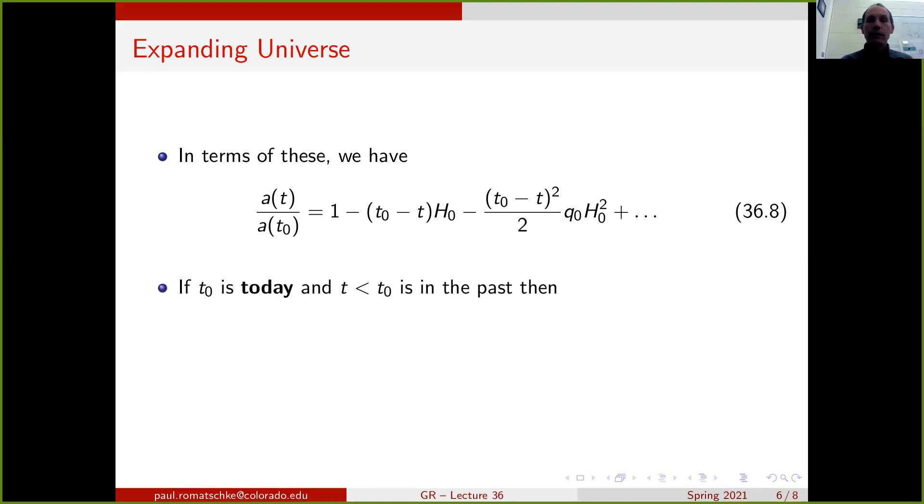So in terms of these two parameters, we then have the ratio a(t) over a(t0) given as 1 minus (t0 - t)h0 and a second quadratic term that comes in with the deceleration parameter. What do these mean? Well, if we now suppose that t0 denotes our time today, so that t, which is then taken a bit smaller than t0, is somewhere in the past of our universe, then this expression says that if t is very close to t0, then a(t) divided by a(t0) is approximately 1. But if we go back in time, we can correct for this by including the linear term. Since t is smaller than t0, this here is a positive number, so the ratio a(t) over a(t0) for times that are in the past is smaller than 1. This just means that the scale factor of the universe was smaller at earlier times.